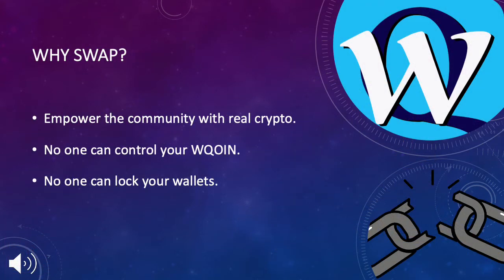This brings us back to the question: why do we want to swap coins? By making the coin tokens available on a decentralized public blockchain, we can empower the coin community with all the features of a true cryptocurrency. No one can control, change, or touch your coins once they are on a decentralized public blockchain. You will also be able to access your swapped coins through a range of decentralized wallets, so no one can stop you from accessing your own W coins. The rest of the video explains what other benefits we offer when you swap your tokens through us.